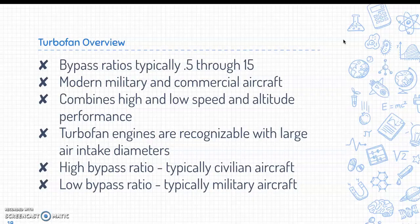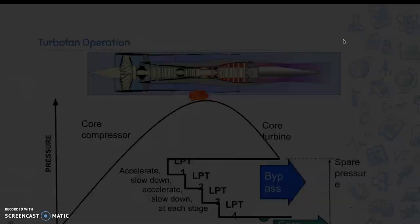Turbofan bypass ratios are typically 0.5 through 15. They're used by modern military and commercial aircraft, combining high power with low speed and altitude performance. Turbofan engines are recognizable by their large air intake diameters on the front. A high bypass ratio is typically for civilian aircraft, while a low bypass ratio is typically for military aircraft.